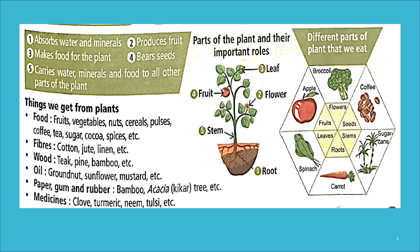Medicines are also obtained from plants — cloves, turmeric, neem, and tulsi, among many more. We also get perfume from flowers. These were the key things covered in the workbook. Now let's do some practice questions.